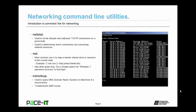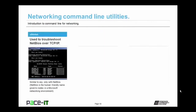NSLOOKUP is used to query DNS to determine if a record exists — very useful in troubleshooting DNS issues. Nbtstat is used to troubleshoot NetBIOS over TCP/IP, similar in function to ARP but for NetBIOS. NetBIOS is the human-friendly name given to nodes.